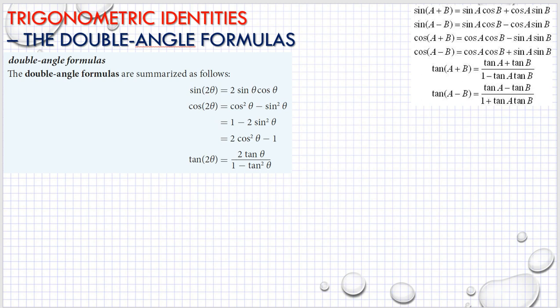As you can see here, I have the double angle of sine: sine 2θ is equal to 2 sine theta cosine theta.